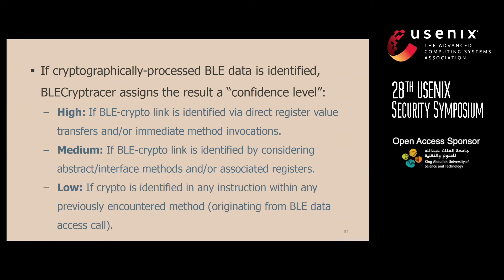If a link is identified in this manner, the result is given a confidence level of high because we're fairly certain that cryptographically processed data will actually exist. If a direct link cannot be identified, the tool will additionally consider abstract and interface methods, as well as registers used as arguments to previously encountered methods. If a link is identified using this method, because there's some level of uncertainty, the result is given a confidence level of medium. If neither method produces a result, the tool looks through every instruction of every method previously encountered that originated from the BLE data access call. If any of those instructions contain a reference to crypto, the result is given a confidence level of low due to quite a lot of uncertainty.